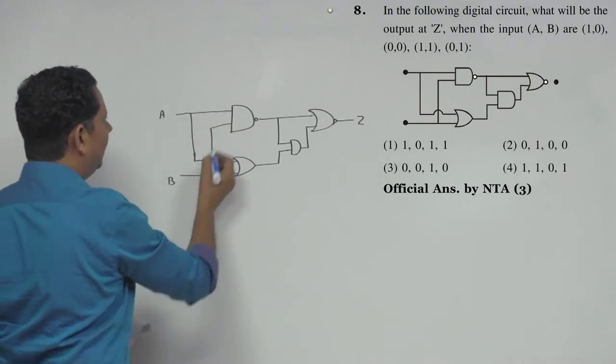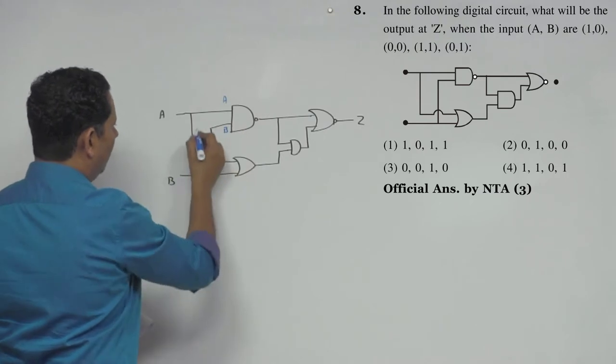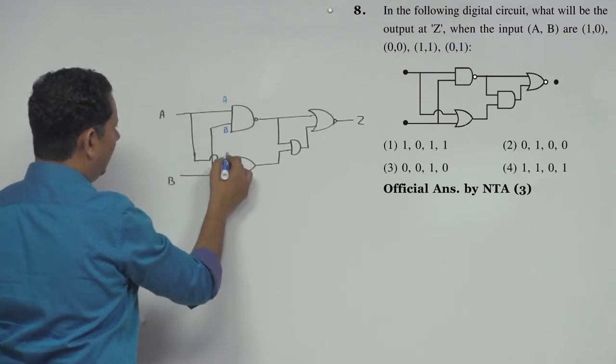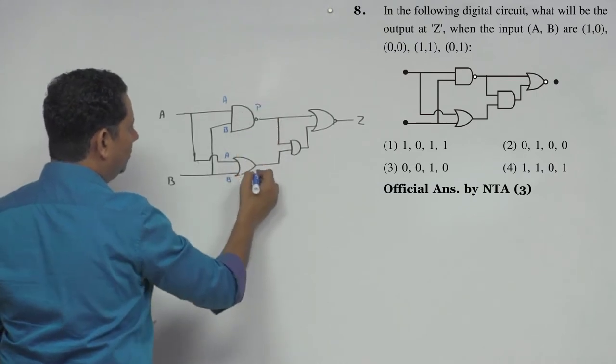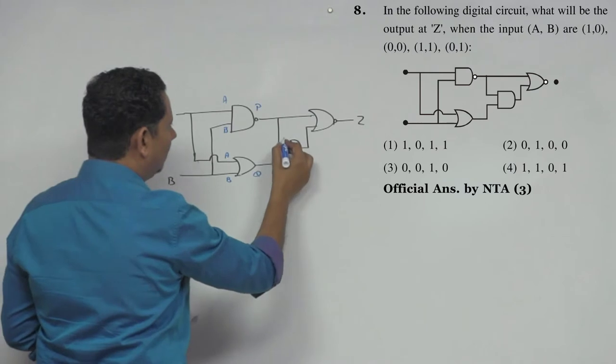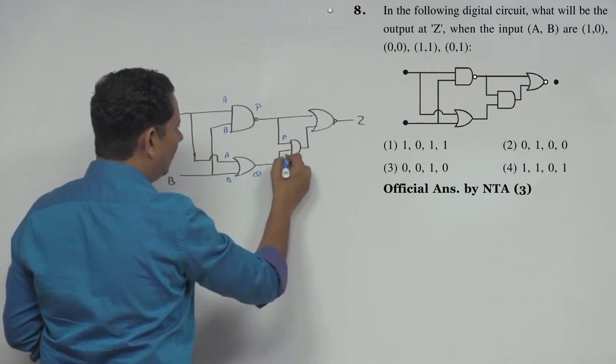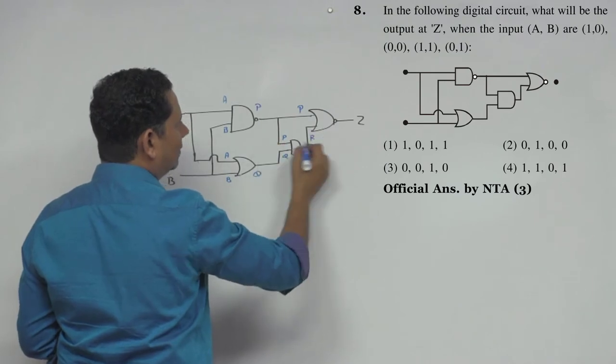Let's say you have A, this is B, and here you have A and this is B. Let's call this P, and this is Q. So here the signal is P, here is Q, this is P, let's say this is R, and this is Z.